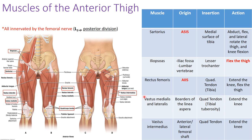The vastus medialis and vastus lateralis both arise from the linea aspera, the groove in the back of the femur. The quadriceps tendon is a combination of all the vastus muscles and the rectus femoris. It becomes the patellar tendon — or patellar ligament — after crossing over the patella, then inserts onto the tibia. The primary action is to extend the knee.